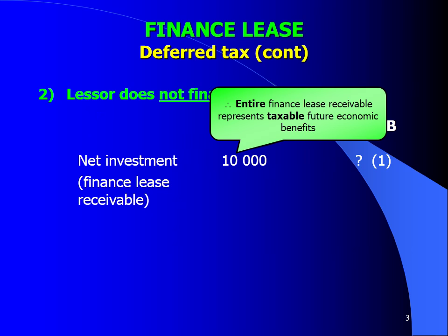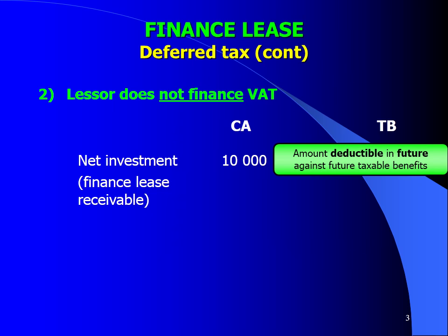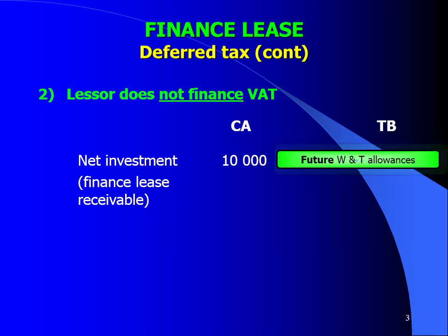Therefore, the entire finance lease receivable of R10,000 represents taxable future economic benefits. What does that mean? Your tax base will be equal to the amount deductible in future against that taxable benefit — therefore, your future wear and tear allowances.